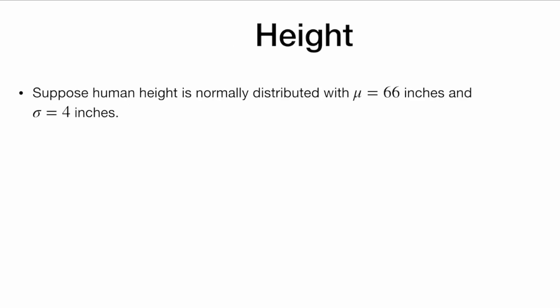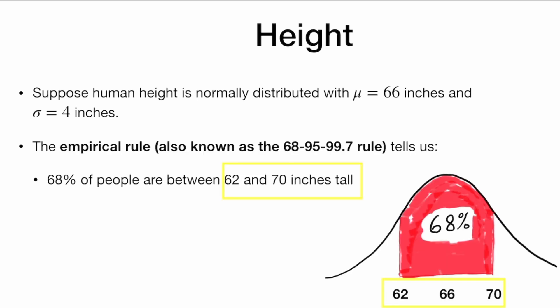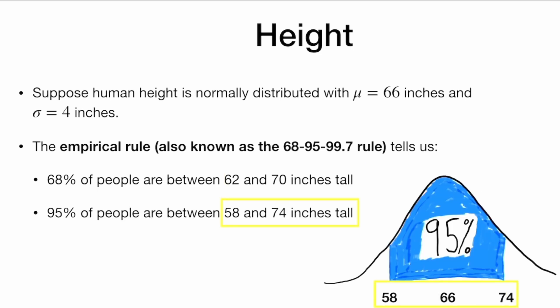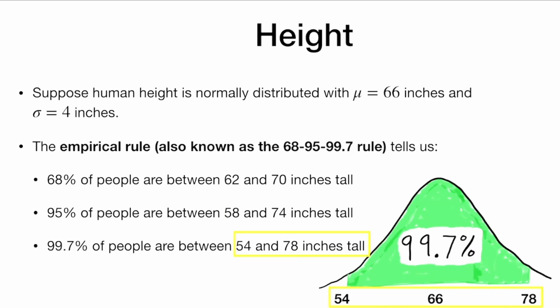Now let's take a more relatable example: something like height. Suppose that we know that human height is normally distributed with a mean of 66 inches and a standard deviation of four inches. What does the empirical rule tell us? It tells us that 68% of people are within one standard deviation of the mean, so between 62 and 70 inches tall. 95% of people are between 58 and 74 inches tall, within two standard deviations of the mean. And 99.7% of people are between 54 and 78 inches tall, within three standard deviations of the mean.